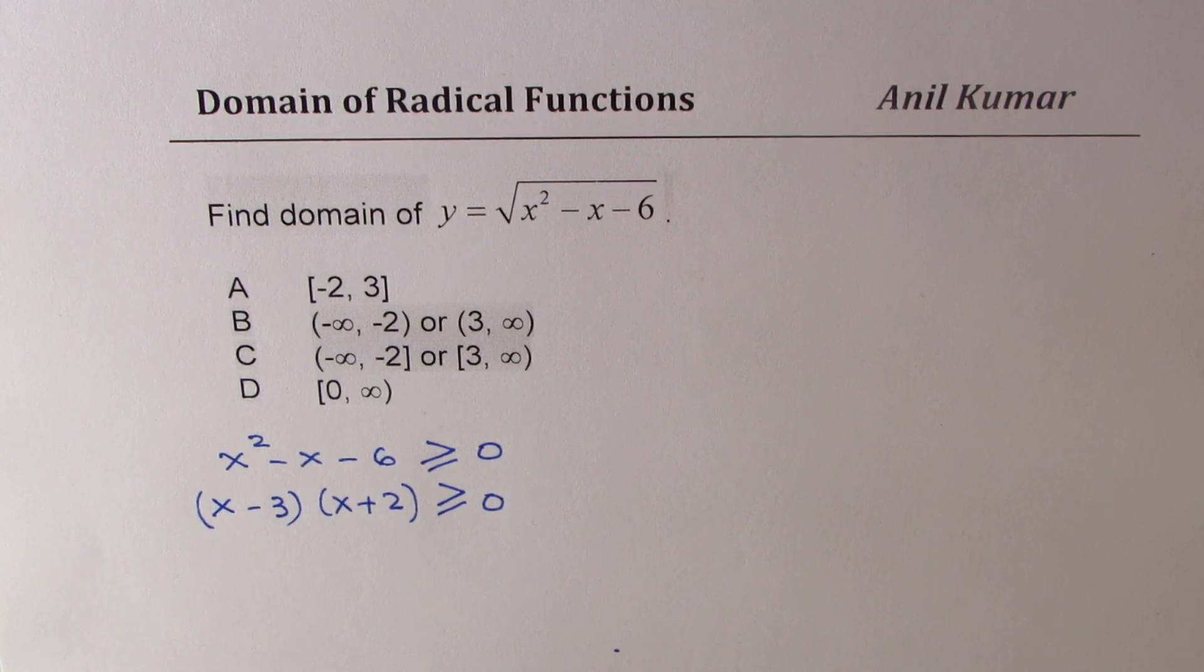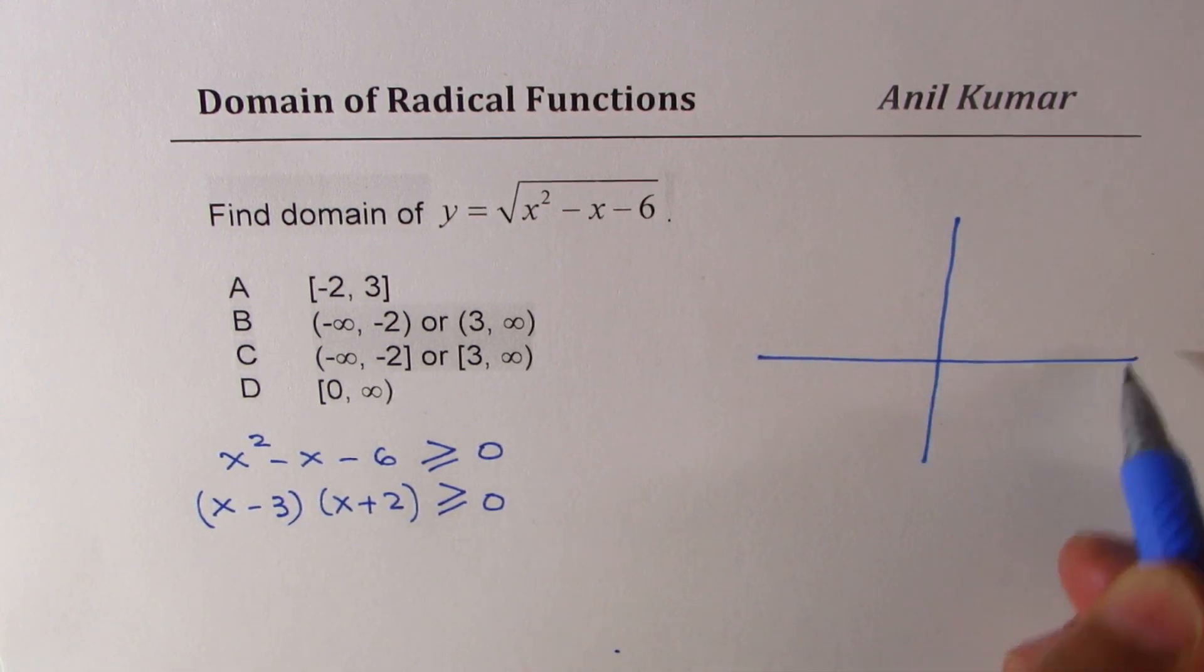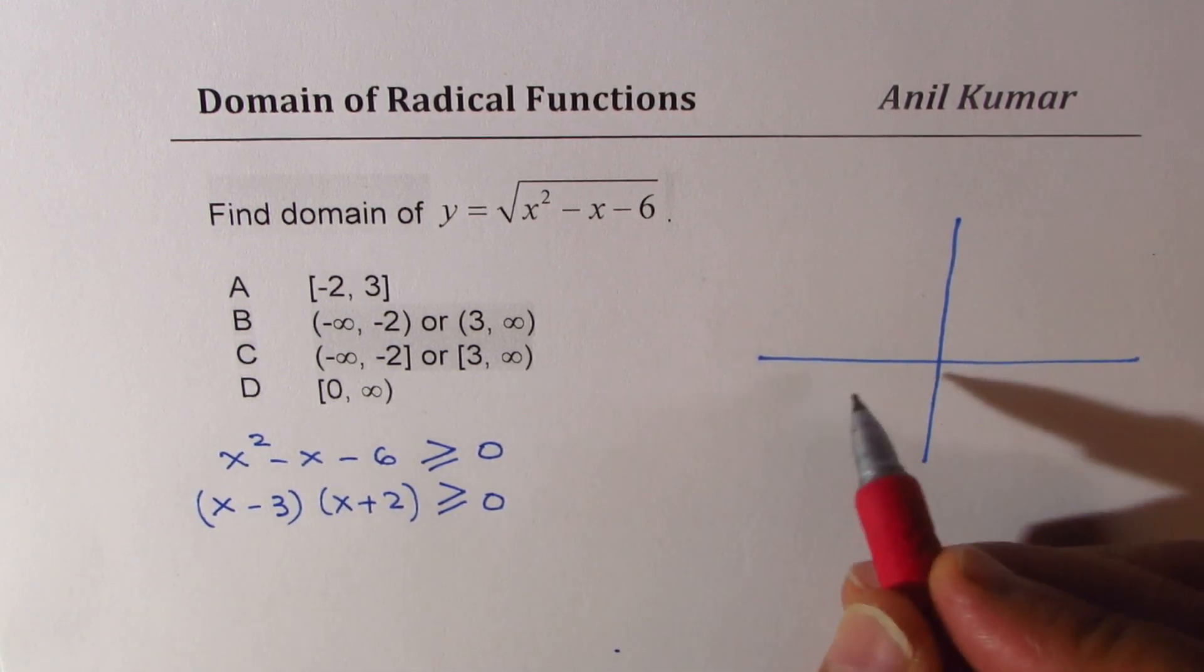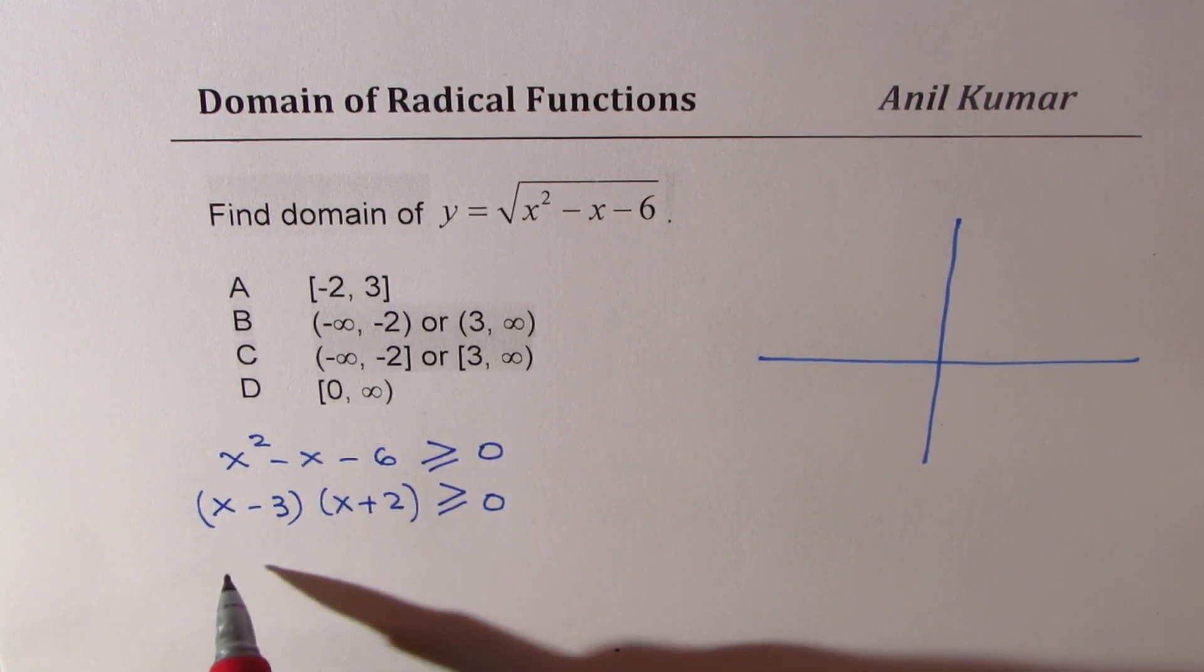Graphing it basically means we have two zeros. One is at minus 2, the other one is at 3. The parabola opens up.